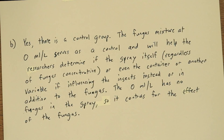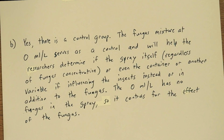On part B, they want to know if this experiment has a control group. Yes, it does. The fungus mixture at 0 milliliters per liter serves as a control and will help the researchers determine if the spray itself, regardless of the fungus concentration, or even the container or another variable, is influencing the insects instead of or in addition to the fungus.